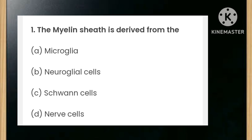The myelin sheath is derived from: microglia, neuroglial cells, Schwann cells, or nerve cells? The answer is Schwann cells.